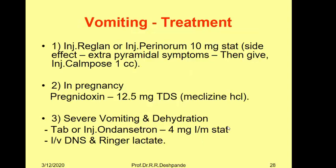First, we must rule out causative factors and treat the original cause — for example, appendicitis or cholecystitis with antibiotics. Symptomatically, Injection Reglan or Injection Perinorm (10 mg stat) can be given. There are some side effects to keep in mind — extrapyramidal symptoms can occur — and in that case, Injection Compose 1 cc IV or intramuscular can be used as an antidote.